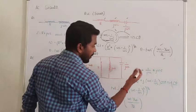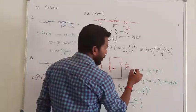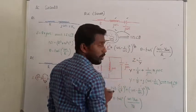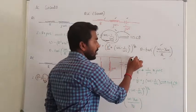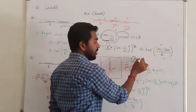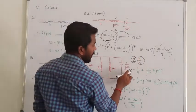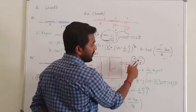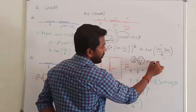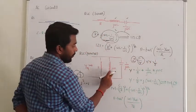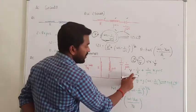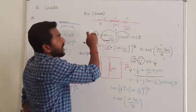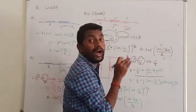In a parallel circuit we have to calculate admittance. We all know impedance and admittance are reciprocal to each other. In a series circuit we consider impedance; in a parallel circuit we consider admittance. We need to know the value of admittance. Admittance is the reciprocal of impedance. In series you add impedances; in parallel you add admittances.